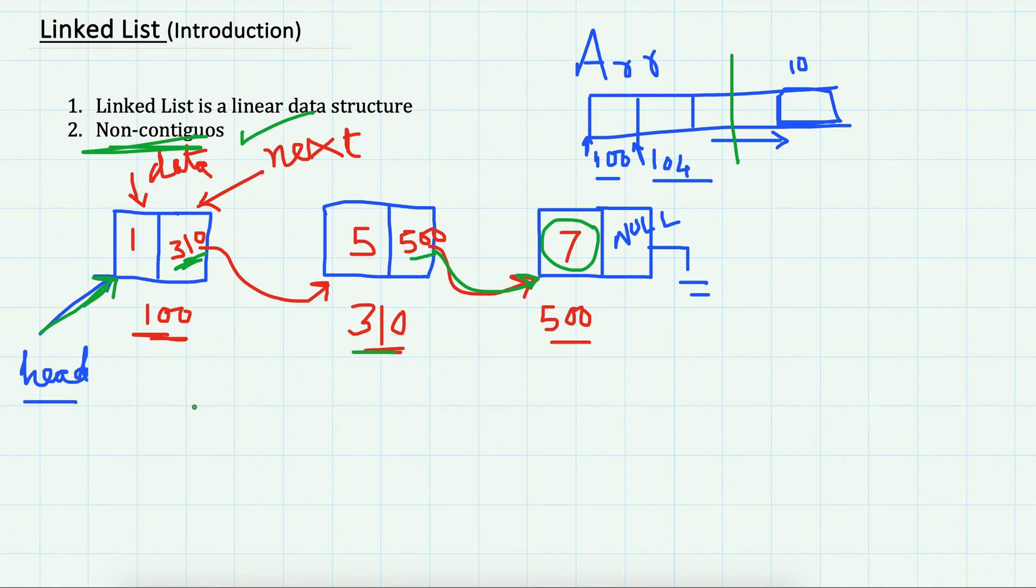after the other; we cannot directly access a particular node in the list. Thanks for watching. In the next video, we will see the various operations that we can perform on the linked list. In further sections, we will see other types of linked lists. By default, it has just one pointer, like